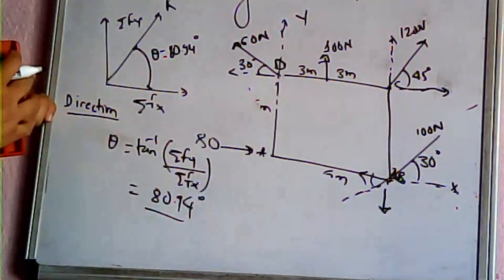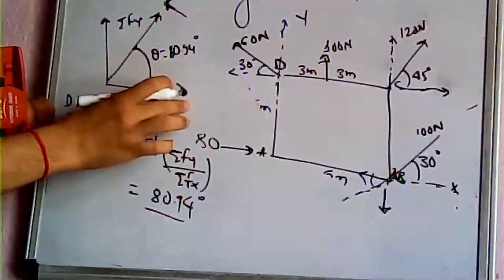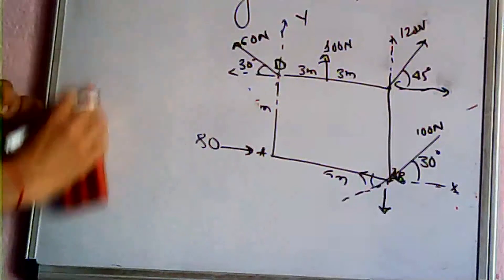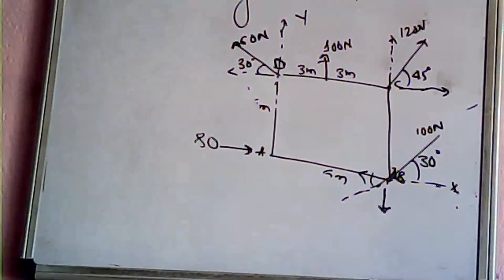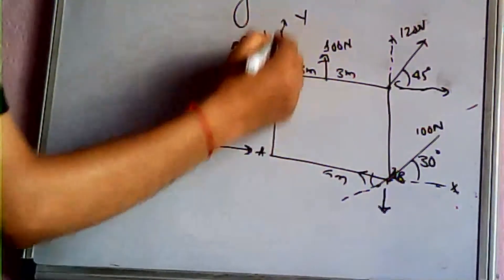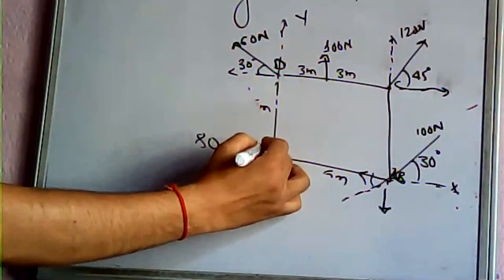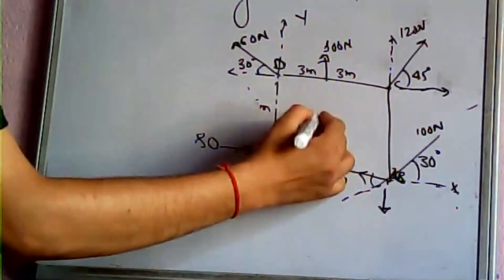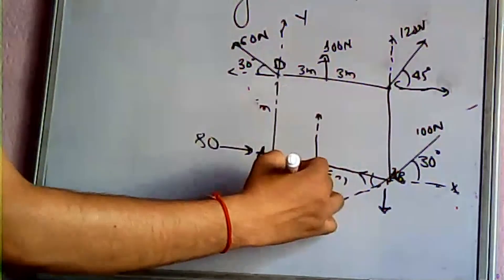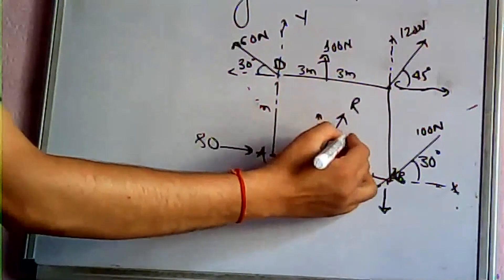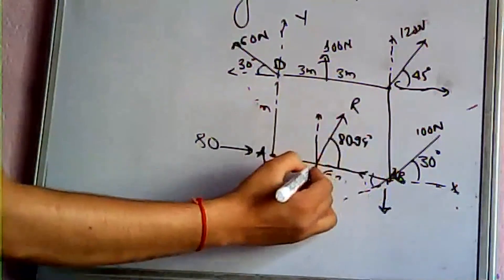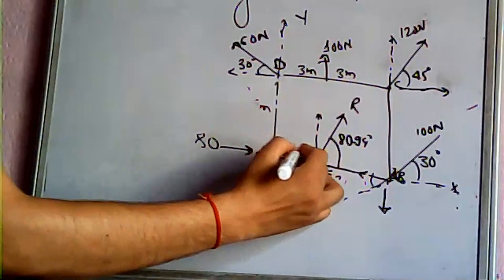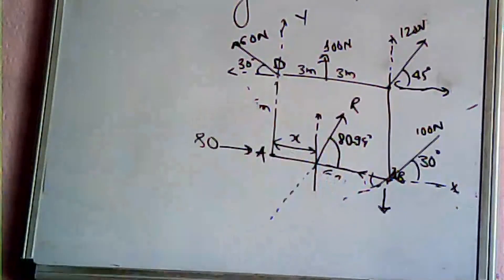So the resultant is established with its new direction at 80.94 degrees.